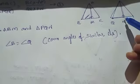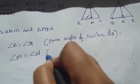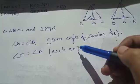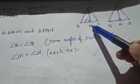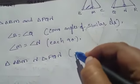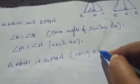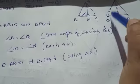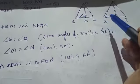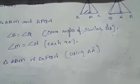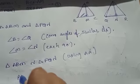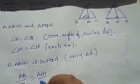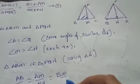Also, angle M equals angle N, each equal to 90 degrees. Using the Angle-Angle (AA) similarity criterion, triangle ABM is similar to triangle PQN. Since these two triangles are similar, the corresponding sides are in proportion: AB by PQ equals AM by PN equals BM by QN.